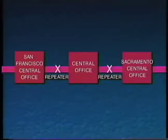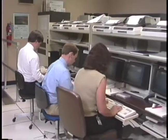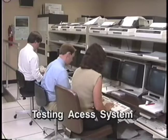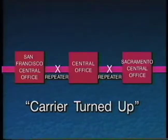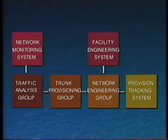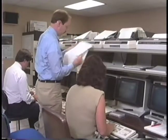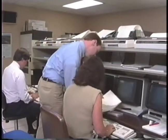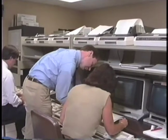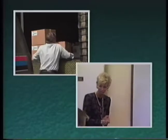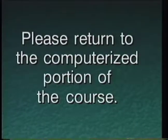On the plant test date, overall end-to-end performance testing of the new trunks was performed using a testing access system for remote testing of the circuits. On the order completion date, the carrier was turned up and made available as part of the network. When the facility engineering system produced the trunk order document, information on significant dates was automatically sent to the provisioning tracking system. If any work had not been completed by the scheduled date, a jeopardy would have been posted by the provisioning tracking system, allowing progress to be monitored and action taken to keep the job on schedule.